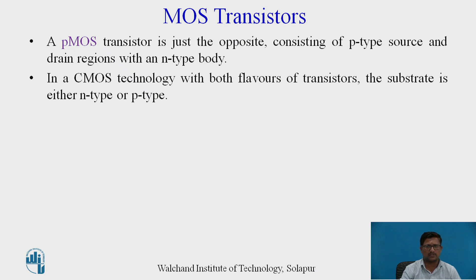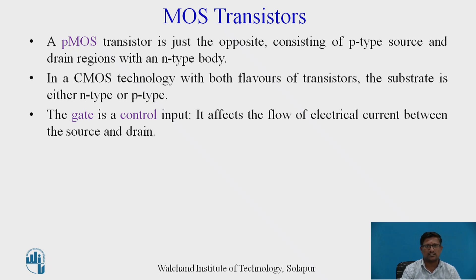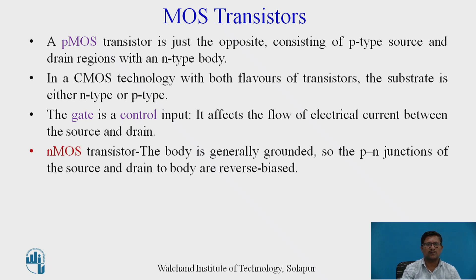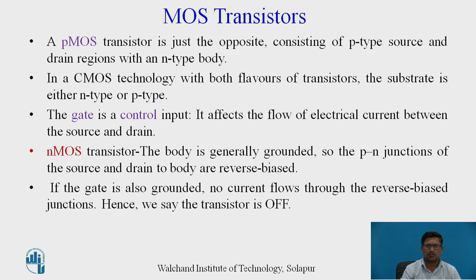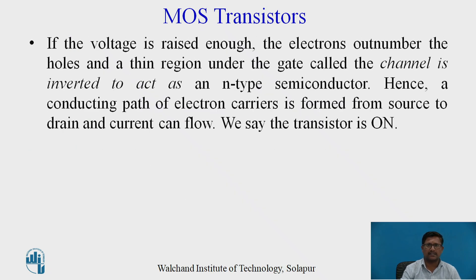In CMOS technology, the substrate is either N-type or P-type. The gate is the control input — it affects the flow of electrical current between source and drain. The conductivity of NMOS and PMOS depends on the voltage applied at the gate terminal. For NMOS, the body is generally grounded, so the PN junctions of source/drain and body are reverse biased. If the gate is also grounded, no current flows through the reverse-biased junction and the transistor is off. When gate voltage is increased, electrons outnumber holes and a thin region under the gate called the channel is inverted to act as N-type semiconductor, forming a conducting path from source to drain — the NMOS is on.